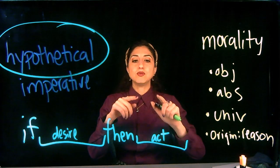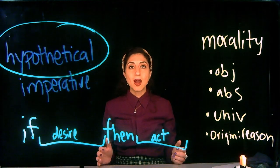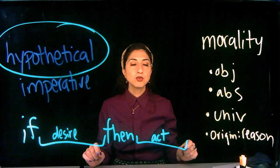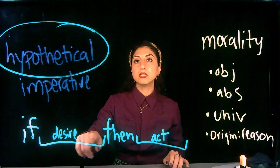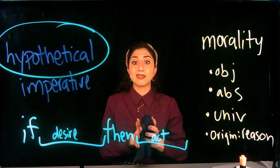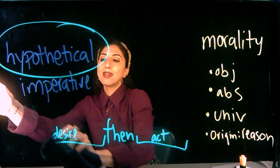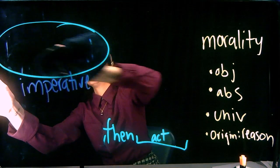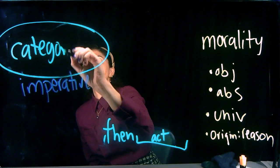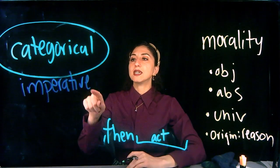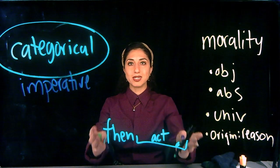Hypothetical imperatives are the things that you need to do given some goal that you have. For Immanuel Kant, morality is not like that at all. What is obligated for you to do according to reason has nothing to do with your desires, your emotions, the consequences you want to bring about, your goals, or anything like that. The categorical imperative tells you what you should do just because you are a human being. A categorical imperative is the thing it is critical for you to do no matter what — there's no 'if,' no hypothetical, there is just what you need to do.